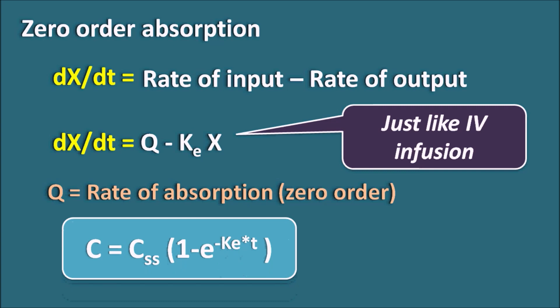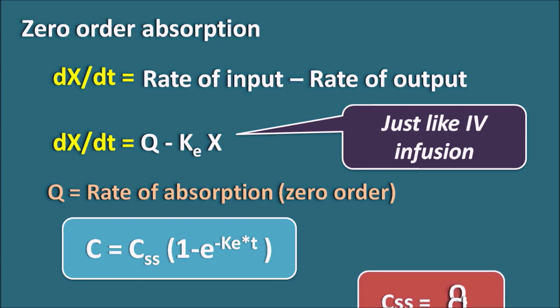The equations related to IV infusion also apply to zero-order absorption extravascular route: concentration C equals CSS times (1 minus e to the power of minus k·t), and CSS equals q divided by clearance. These calculations were discussed in a previous video, so today we focus on first-order absorption kinetics in the extravascular one-compartment model.